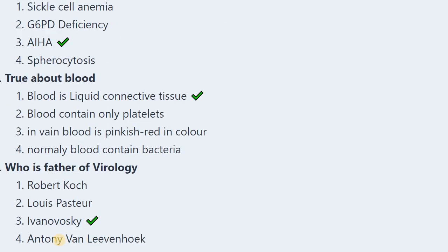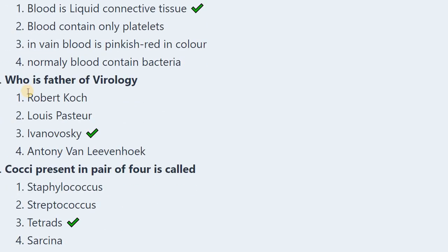Next: Which is true about blood? Options: blood is liquid connective tissue, blood contains only platelets, venous blood is pink red, normal blood contains bacteria. The correct answer is option 1 — blood is liquid connective tissue (a type of fluid connective tissue).